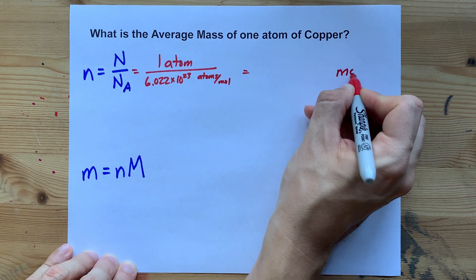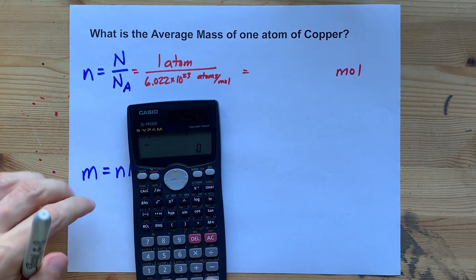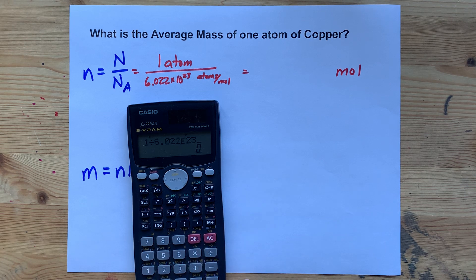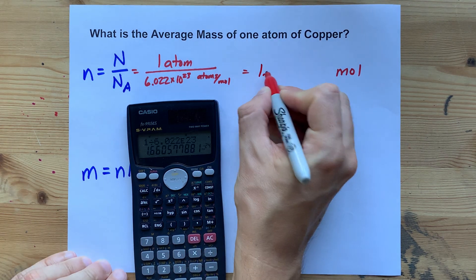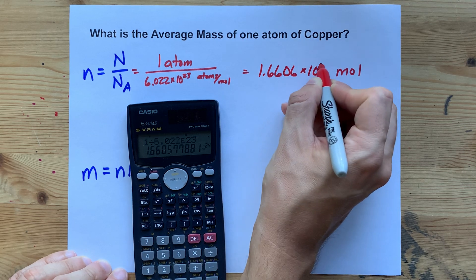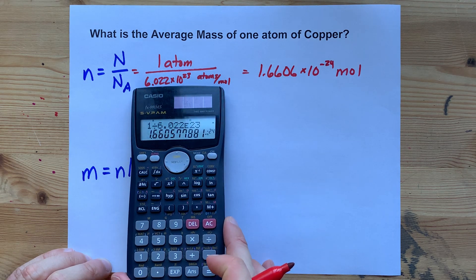You're going to be left with an answer in just moles. Where's my calculator here? We have 1 divided by 6.022 times 10 to the 23. That's 1.6606 times 10 to the negative 24 moles. Can you see that on the calculator? There you go.